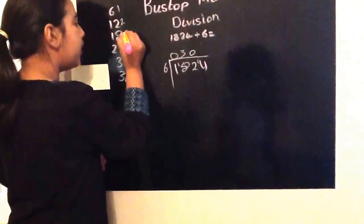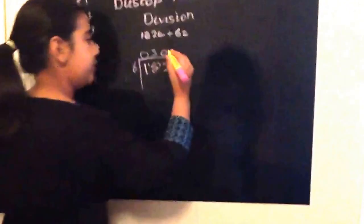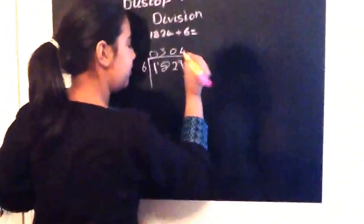So how many sixes go into twenty-four? One, two, three, four. Four do. So we write the four here.